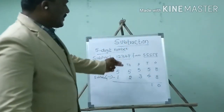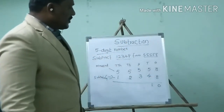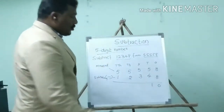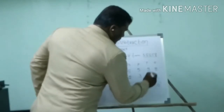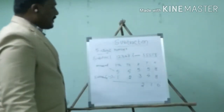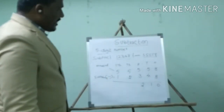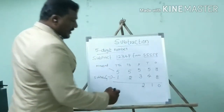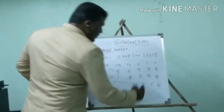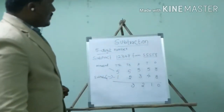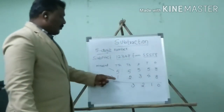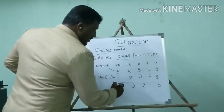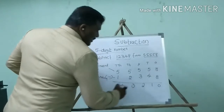Then the hundreds place: 5 minus 3 — minuend is 5, subtrahend is 3 — so 5 minus 3 equals 2, that is the difference. The thousands place: 5 minus 2 — minuend is 5, subtrahend is 2 — so 5 minus 2 equals 3, the difference. Now the ten-thousands place: 5 is the minuend, 1 is the subtrahend — so 5 minus 1 equals 4, the difference.